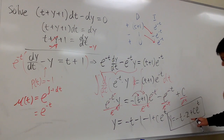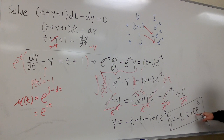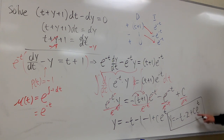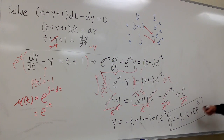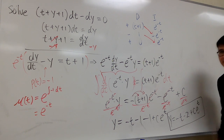And of course, do not say negative 2 plus c is another constant — no, c is multiplied by e^t, so you cannot combine the negative 2 and the c. And that's the final answer.